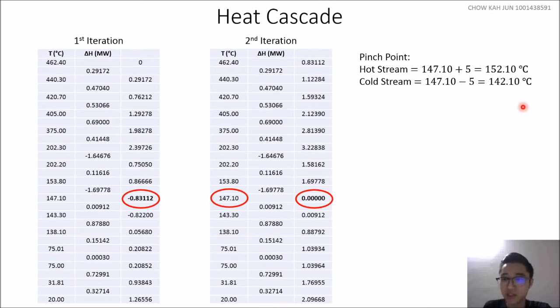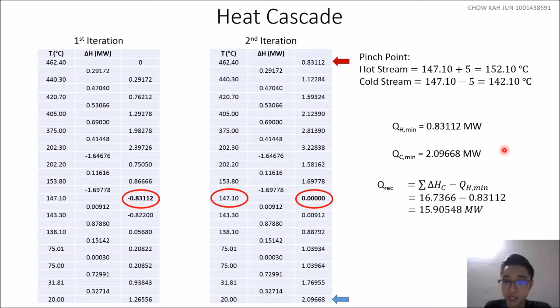This point identifies the temperature for the pinch point. We need to apply back the correction factor of 5 degrees Celsius. Hot stream will be added by 5 as we minus 5 before, and cold stream reduced by 5. So 152.1 and 142.1 are the pinch temperatures for hot stream and cold stream respectively. From the PTA table, we can also get the hot utility and cold utility and the recovery heat when using this heat cascade.